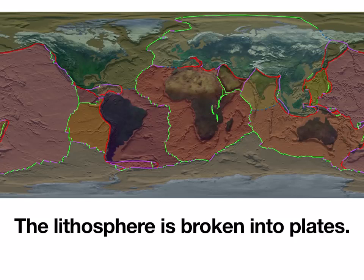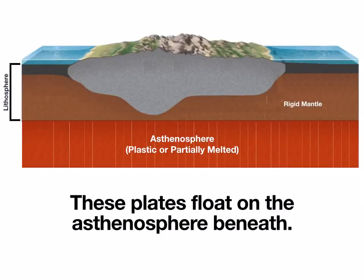Some of the plates are all oceanic crust, some of them are all continental, and some are a combination of the two. That's going to become important. Keep in mind that we do have these two distinct types of crust.